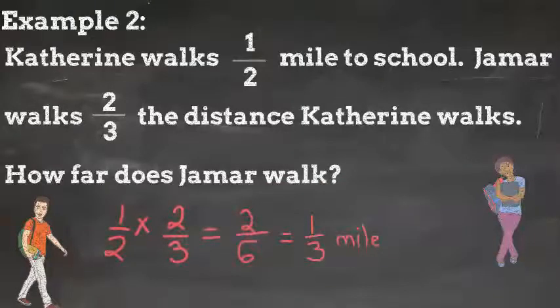Last, we want to make sure our answer is reasonable. Well, if you walk 2 thirds the distance she walks, he should walk almost the same, but slightly less than her. And our answer, 1 third, is slightly less than her distance, 1 half. So our answer is, in fact, reasonable.